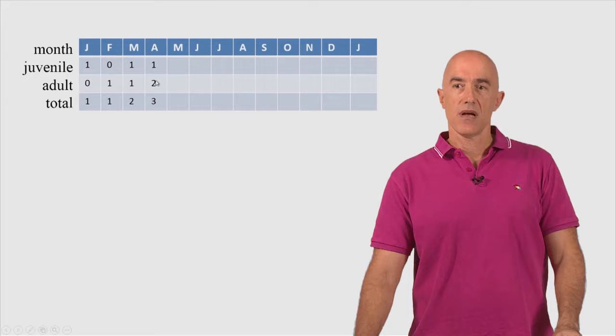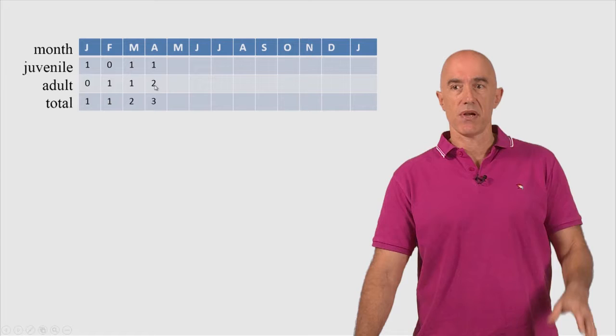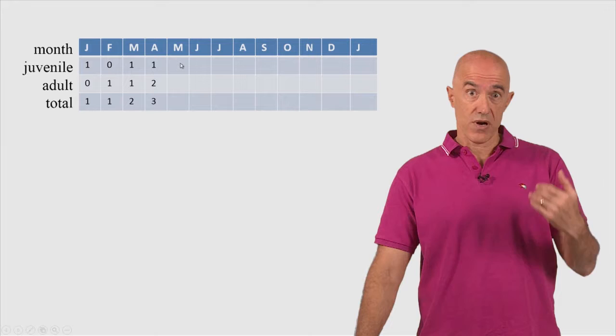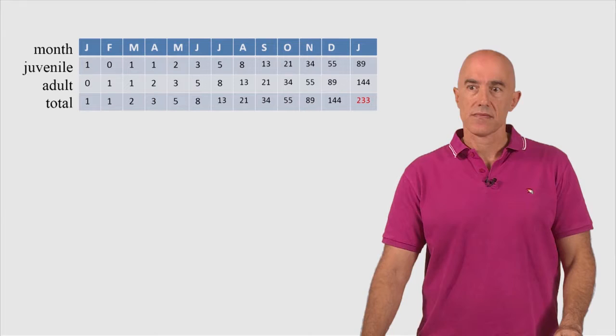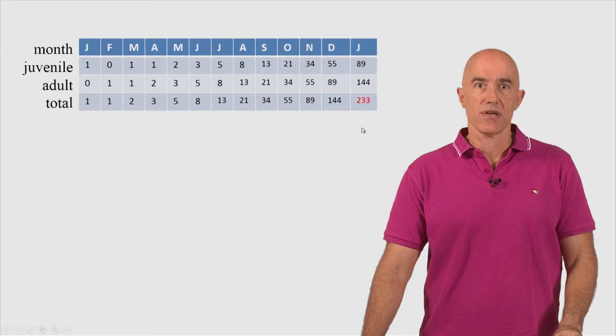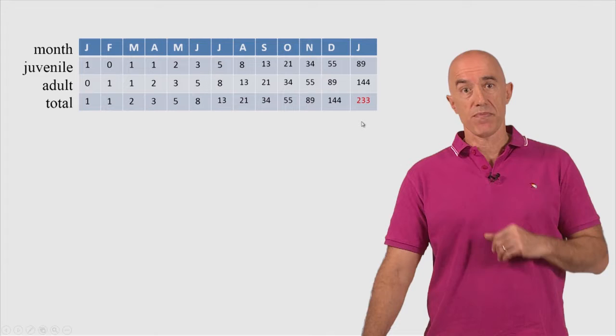And the population proceeds like this. So the adult pairs always give birth, or at least the female of the adult pair of rabbits, always gives birth to newborn rabbits. And the newborn rabbits each month always mature into adults. So if we continue, we can fill up the table. And the answer to Fibonacci's problem is on January 1st of the next year, we would already have 233 rabbit pairs.